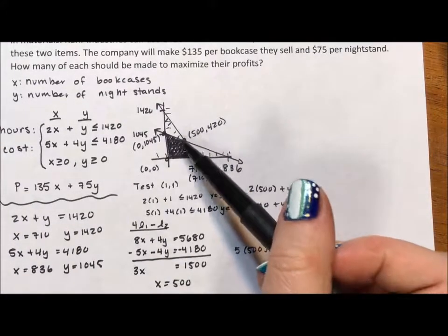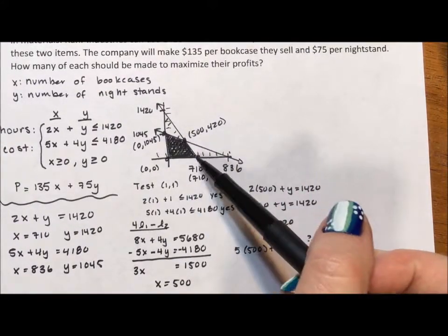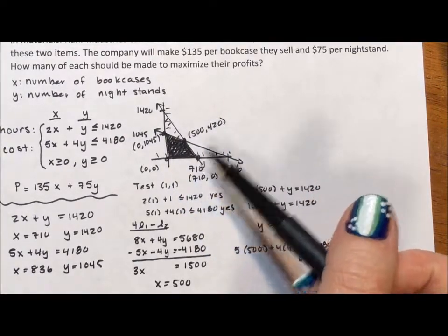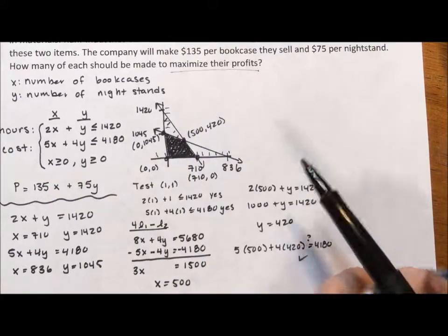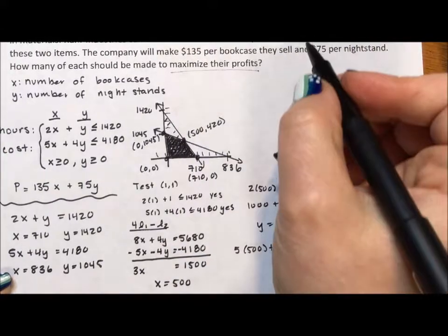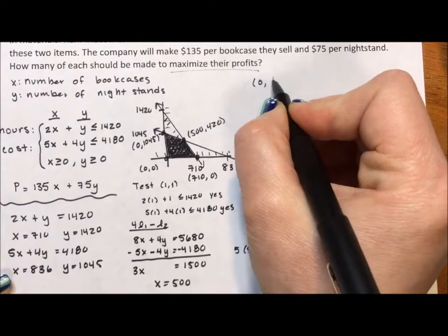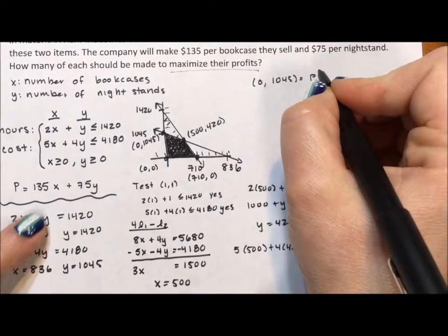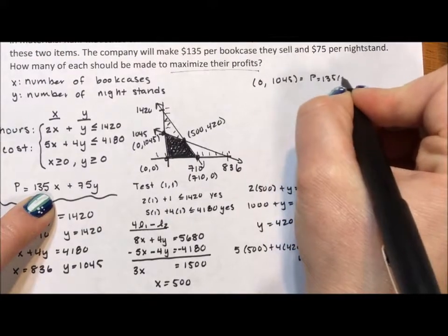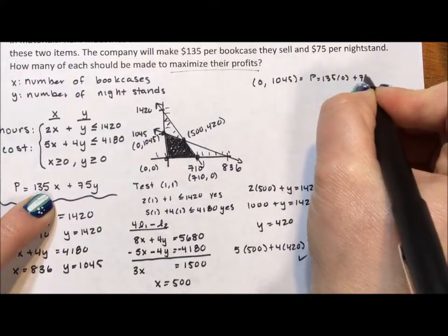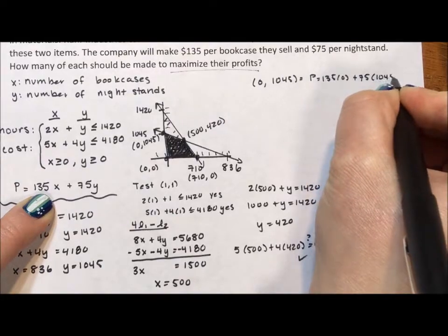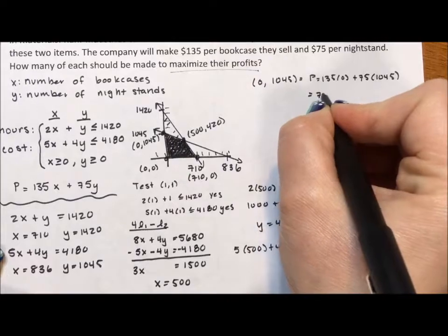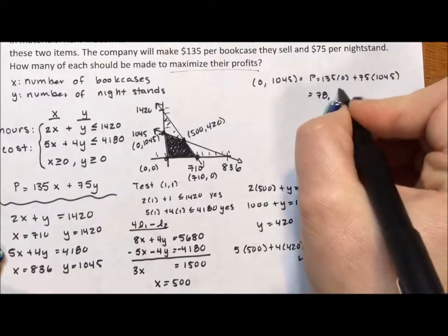A lot of work to get here. We have four ordered pairs. One of these combinations of bookcases and nightstands will give us our maximized profit. So I'm going to test all four of them. If I make zero bookcases and 1045 nightstands, my profit is going to be 135 times zero plus 75 times 1045 and my total profit is going to come out to be $78,375.